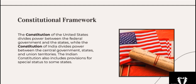In India, the division of power between the central and state government is done through a three-fold distribution of legislative powers known as the Union List, State List, and Concurrent List. The Union List covers subjects of national importance such as defence, foreign affairs, banking, communication, and currency. The central government alone can make decisions on these matters, with the aim of ensuring uniformity in policy throughout the country.